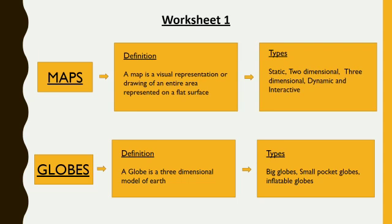Maps. A map is a visual representation or drawing of an entire area represented on a flat surface. There are many kinds of maps such as static, 2-dimensional, 3-dimensional, dynamic, and even interactive.